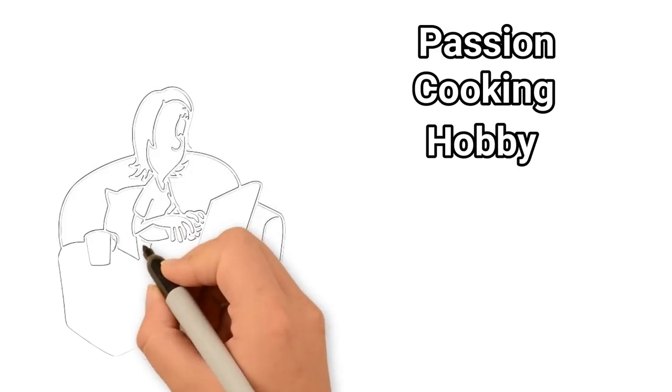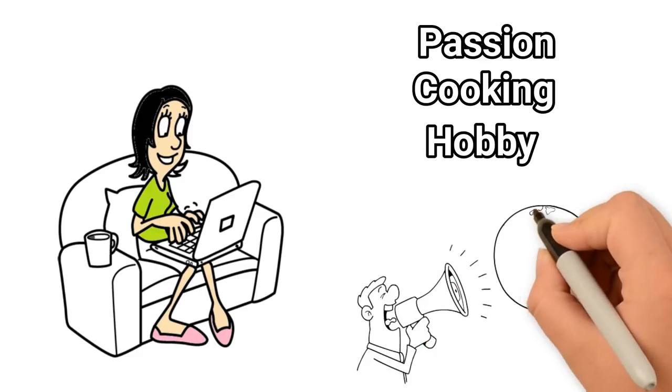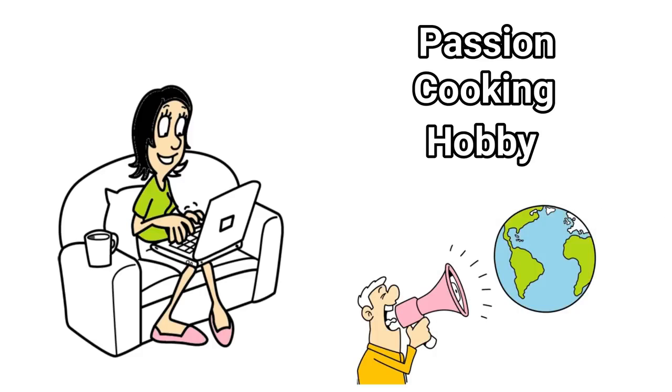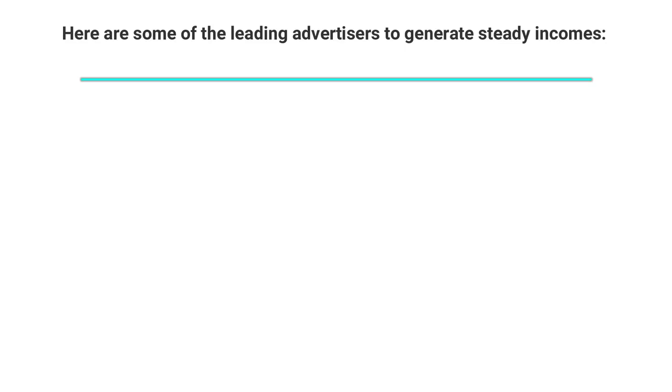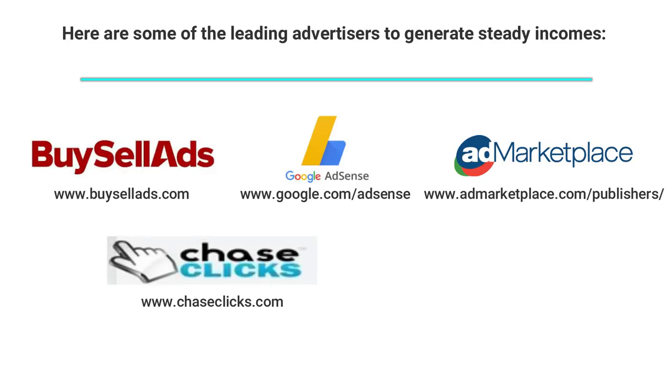Number 6: Start a blog. Blogging on your passion, cooking, or hobby is another great way to monetize from advertisers, affiliate programs, and sponsorships. Here are some of the leading advertisers to generate steady incomes: Google.com/AdSense, BuySellAds.com, AdMarketplace.com/publishers, ChaseClicks.com, AdClerks.com/publishers.